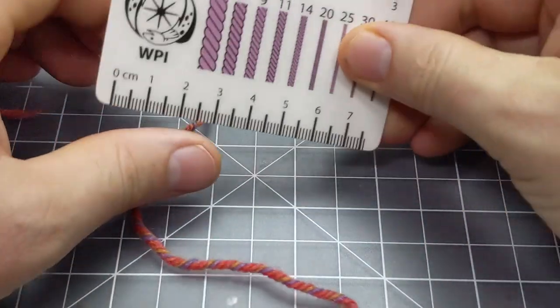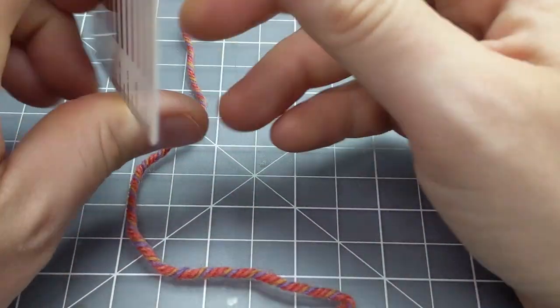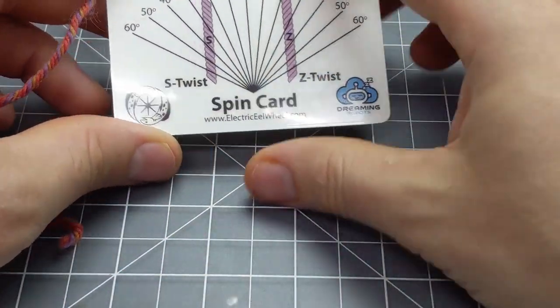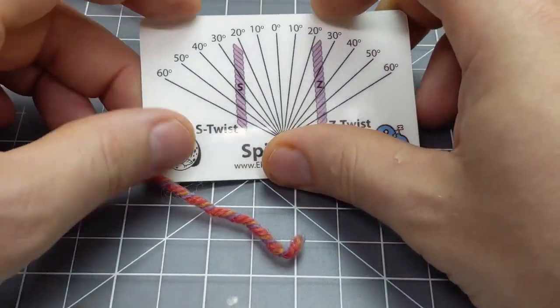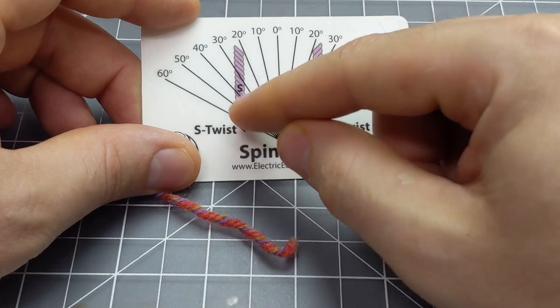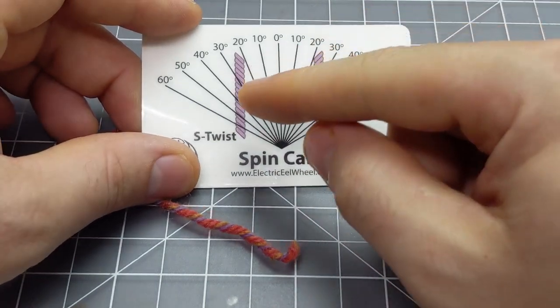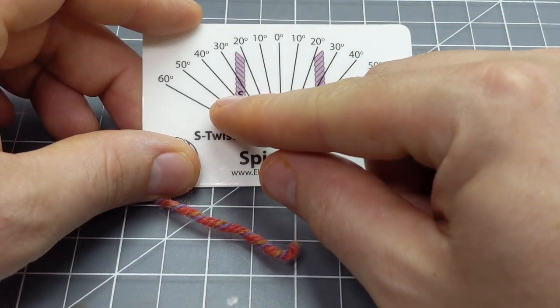Now if I turn it over, there's really two main uses for this side of the card. The first one is that there's this S and this Z, and that's referring to S-twist and Z-twist. I have other videos that talk about S-twist and Z-twist and why you need them, so I'm not going to get into that here.